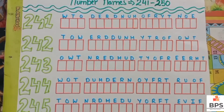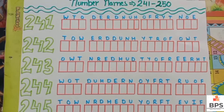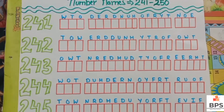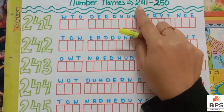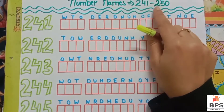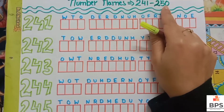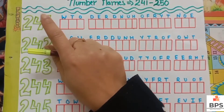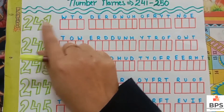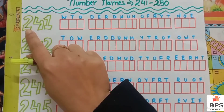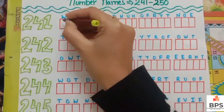Hello everyone, welcome back to our channel Baby Play School. Today let's learn the number names two hundred and forty one to two hundred fifty. So let's do the number names.